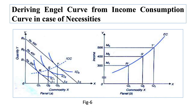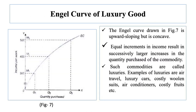Now we study the Engel curve in case of a luxury good. The Engel curve drawn in figure 7 is upward sloping but concave, implying that the slope ΔM/ΔQ is declining with the increase in income. Equal increments in income result in successively larger increases in the quantity purchased of the commodity, meaning that as a consumer becomes richer he purchases relatively more of the commodity. Such commodities are called luxuries. Examples of luxuries include air travel, luxury cars, costly woolen suits, air conditioners, and costly fruits.